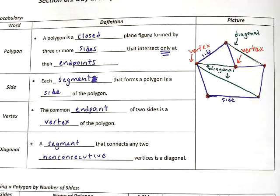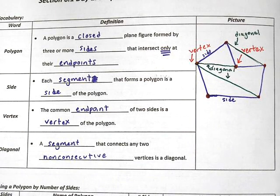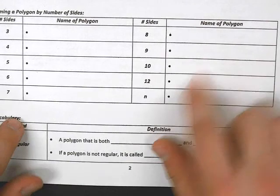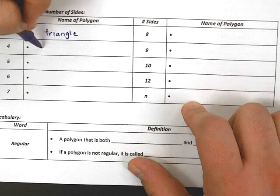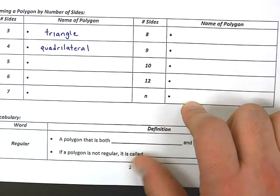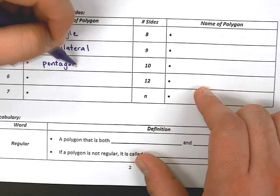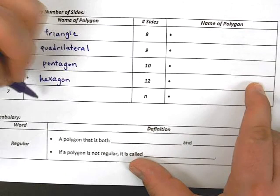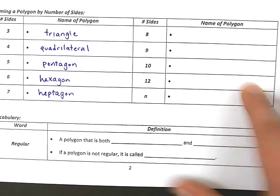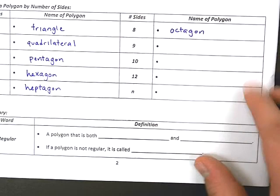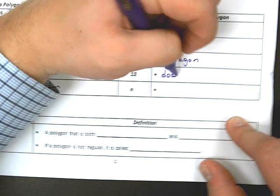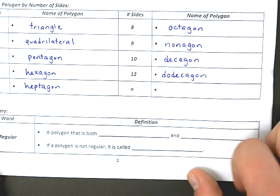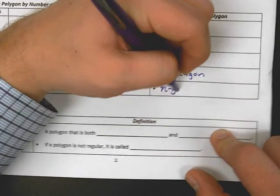Now that we have an idea about what vertices are, sides, and diagonals, let's jump into how we name polygons. A three-sided polygon is a triangle. A four-sided polygon is a quadrilateral. Five is a pentagon, six is a hexagon, seven is a heptagon, eight is an octagon — like a stop sign — nine is a nonagon, ten is a decagon, twelve is a dodecagon, and when I don't know the number of sides or it's greater than twelve, I just say I have an n-gon. That's the easy one.